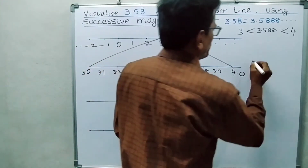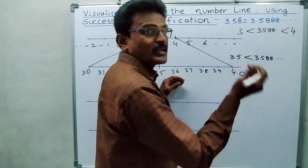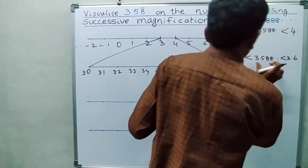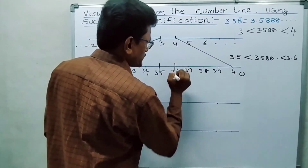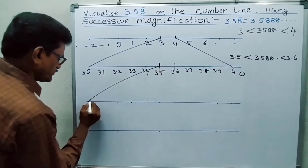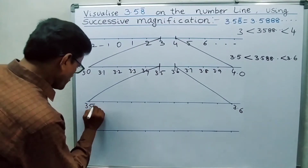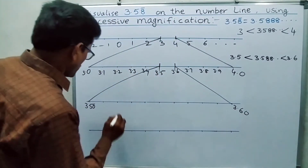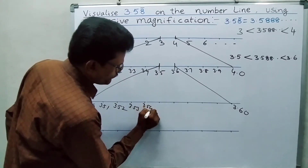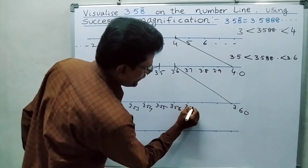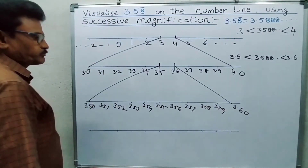Now, where is our number on this number line? 3.5888... is greater than 3.5 but less than 3.6, so it is in between 3.5 and 3.6. Identify these two numbers: 3.5 is here, 3.6 is here. Now mark 3.50 and 3.60, and divide this into 10 equal parts, marking 3.51, 3.52, 3.53, 3.54, 3.55, 3.56, 3.57, 3.58, 3.59, 3.60.